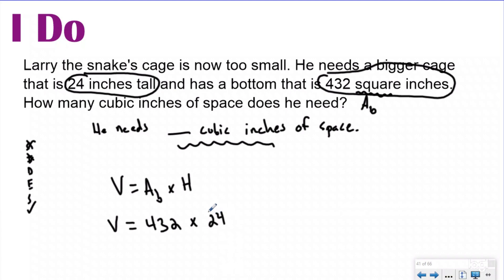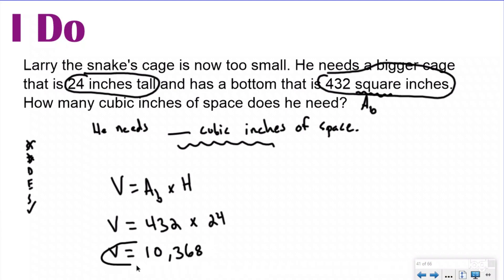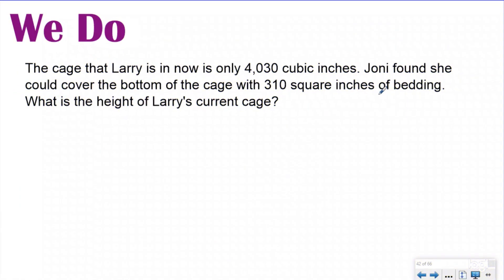If I'm visualizing this, I have 432 cubes on my bottom layer, and then I'm going to have 24 layers of 432. So all I need to do is multiply 432 times 24. When you do that, I get a volume of 10,368 — but that's not correct yet because I don't have my units. I have to have cubic units. So Larry needs 10,368 cubic inches of space.